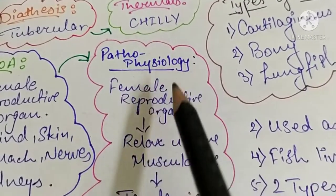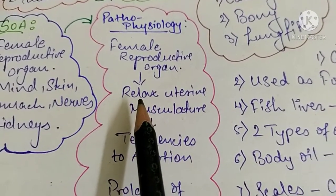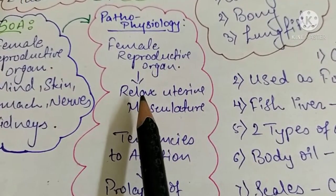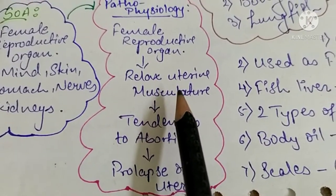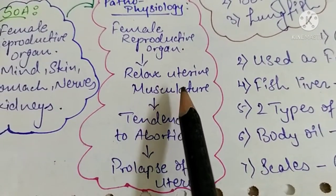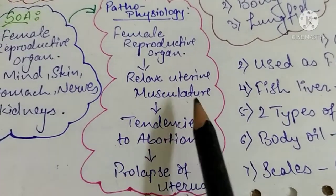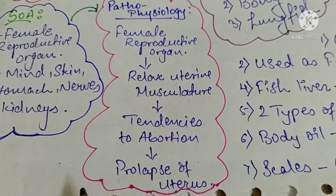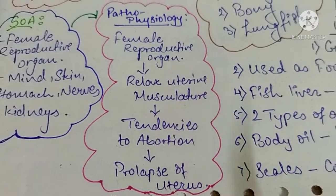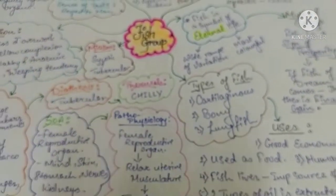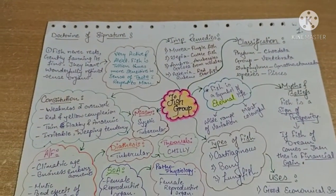Pathophysiology: These remedies act on the female reproductive organ where there is relaxation of uterine musculature, leading to abortion or prolapse of the uterus. There is a tendency to abort and prolapse of uterus present. This covers the common and general characteristics of fish remedies.